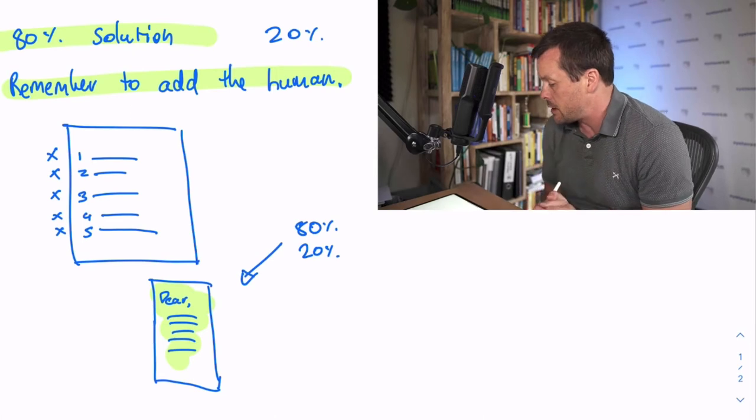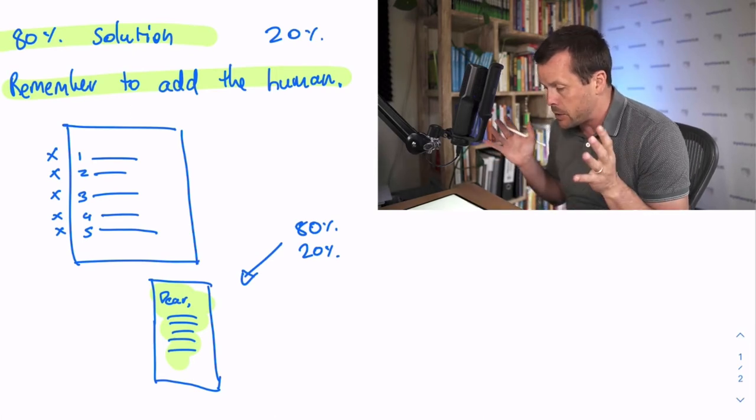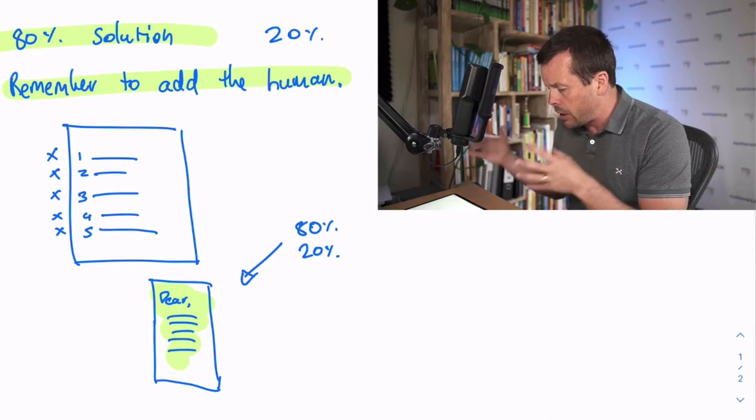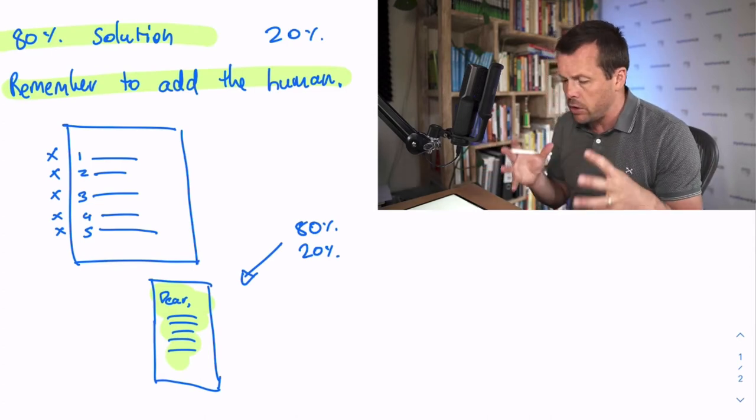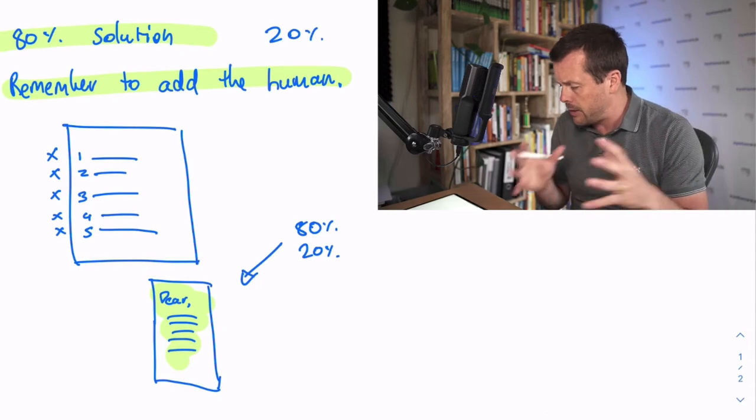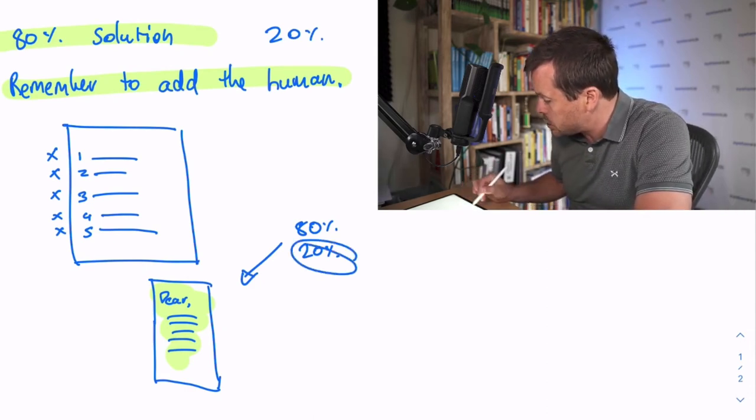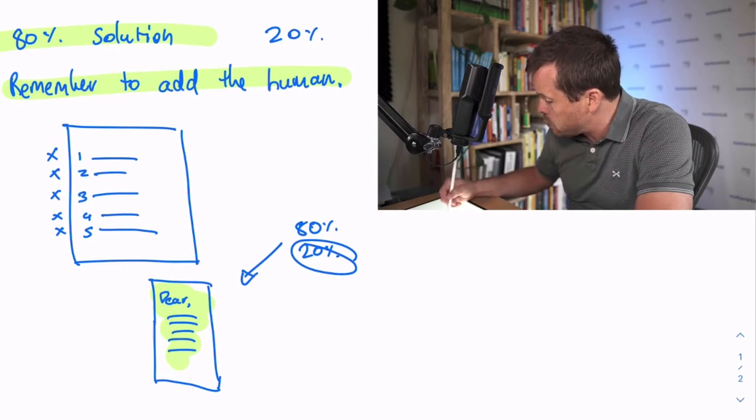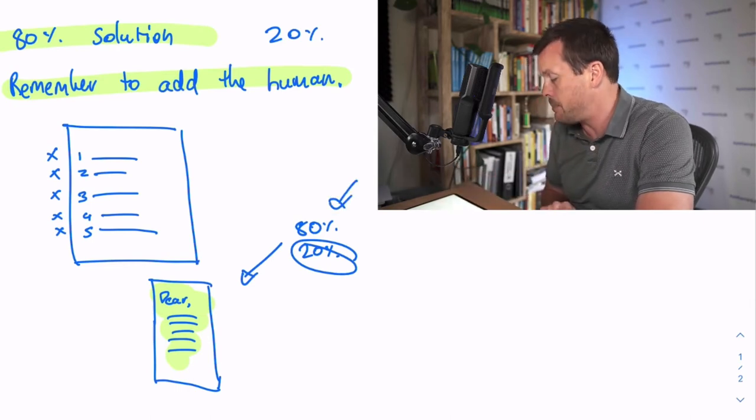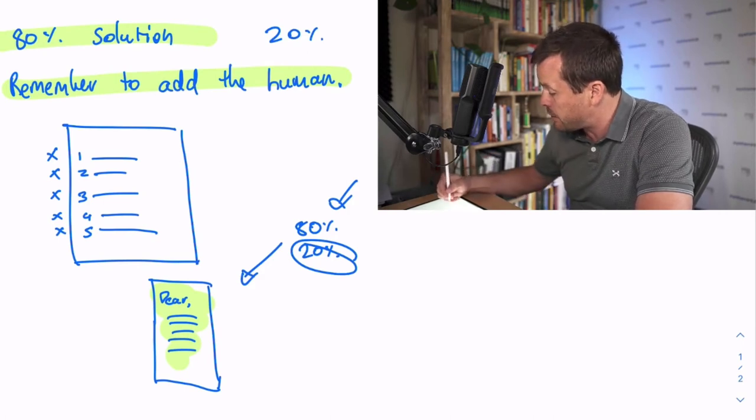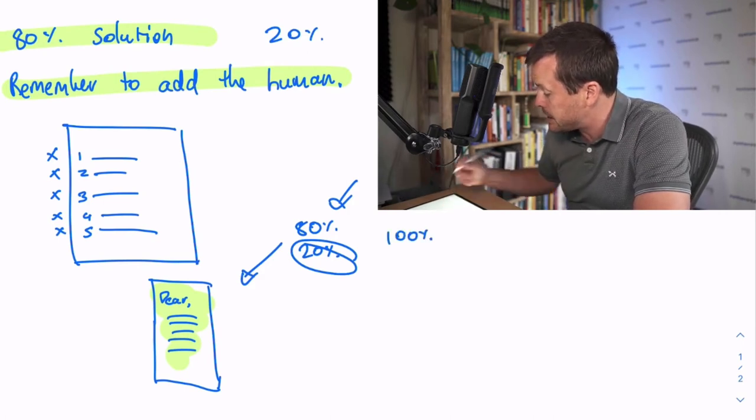'This was designed for me. This email was written for me. I am not just a number or a cog in a machine.' Now, if we customize that 20%, even though it was worked off a template where 80% of it was already written, the person who receives that is going to feel like it was 100% tailored.